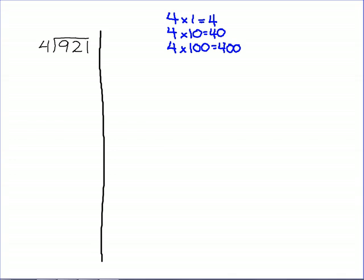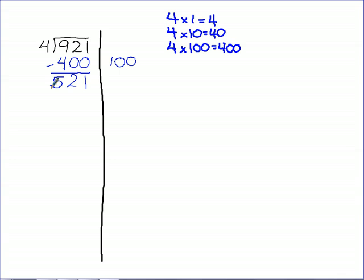I see 4, and I want to find one of these things — 4, 40, or 400 — that's the closest to 921 that I can get to without going over. What do you want to use? 400. All right, so I'm going to take 400 out of this. In order to take 400 out, I need 100 sets of 4. So I'm going to say 100 over here, because 100 sets of 4 makes 400. Now subtract — 921 minus 400 is 521.